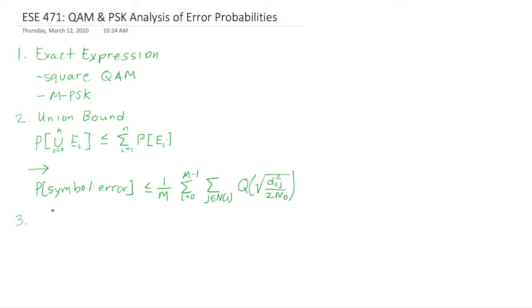Now, we have a third way of coming up with an expression, and that is the nearest neighbor approximation. That says, all these distances are great, and we'll include every neighbor, and we'll get a legitimate bound. But some of these distances are much bigger than others, and they don't contribute much to the actual function, the probability of symbol error. So by ignoring them, I'll get a reasonable approximation.